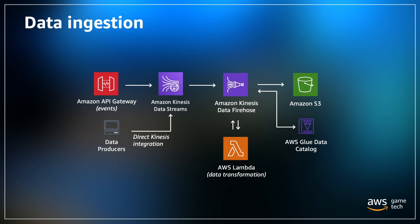Finally, your game event data is stored in Amazon S3, which provides scalable and cost-effective storage for raw and processed data sets. This Amazon S3 bucket is configured with object lifecycle management policies, including a feature called Amazon S3 Intelligent Tiering, which provides cost savings for data sets with unknown or changing access patterns such as data lakes.